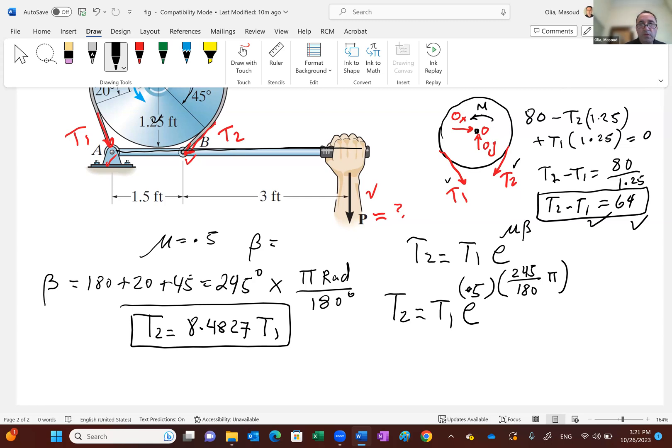T1 comes out to be equal to 8.553 pounds. That's tension T1 and tension T2 similarly would be 72.553. See the difference? T2 minus T1 is what? 64. So here we go. You got the tension T1 and T2. What good is that?